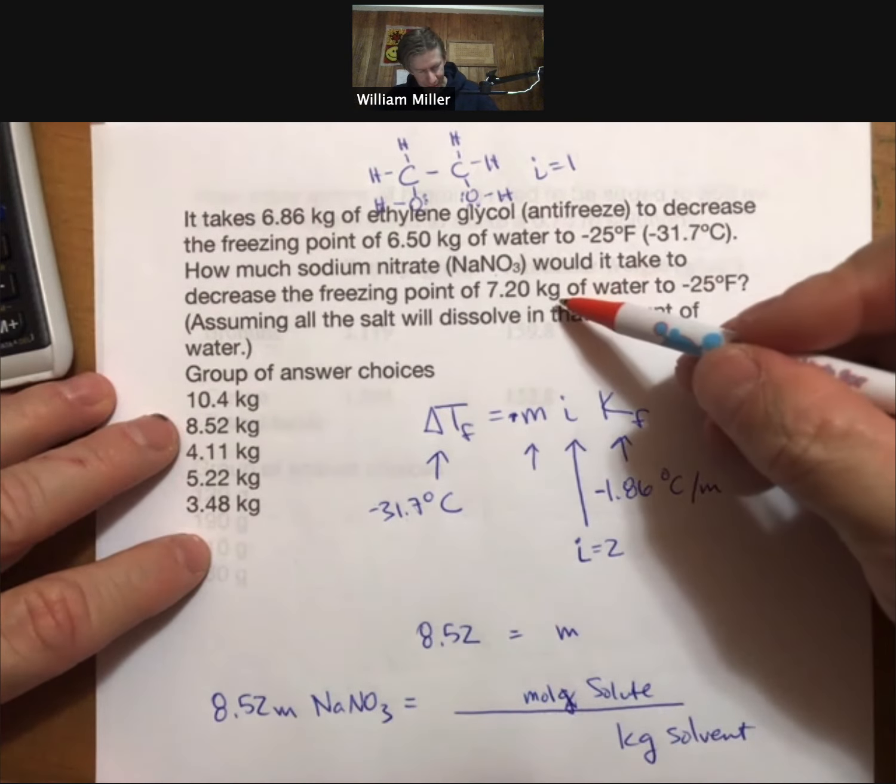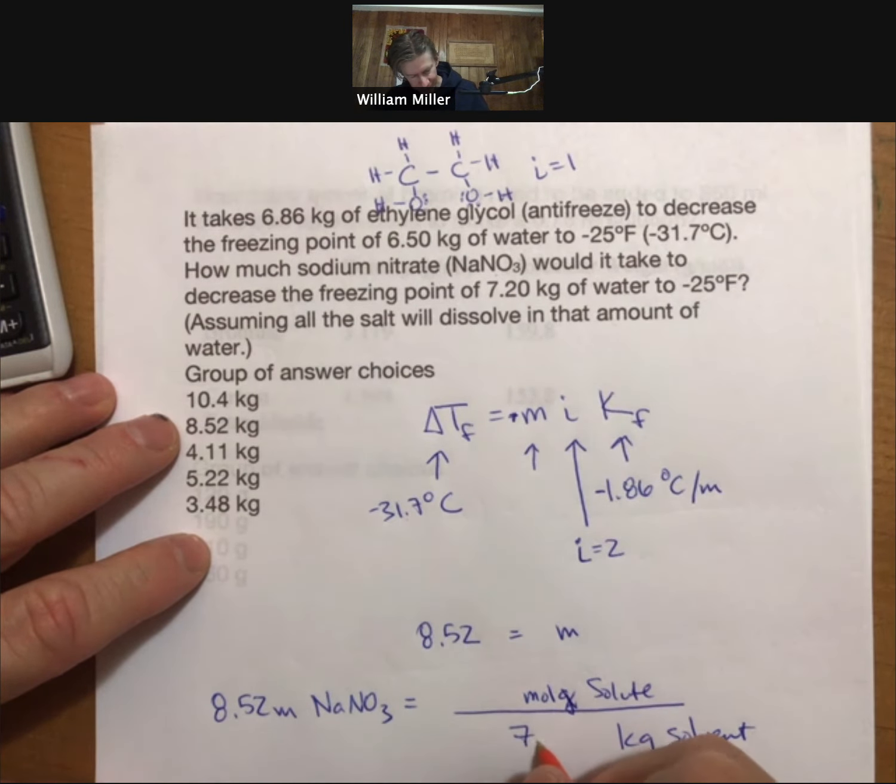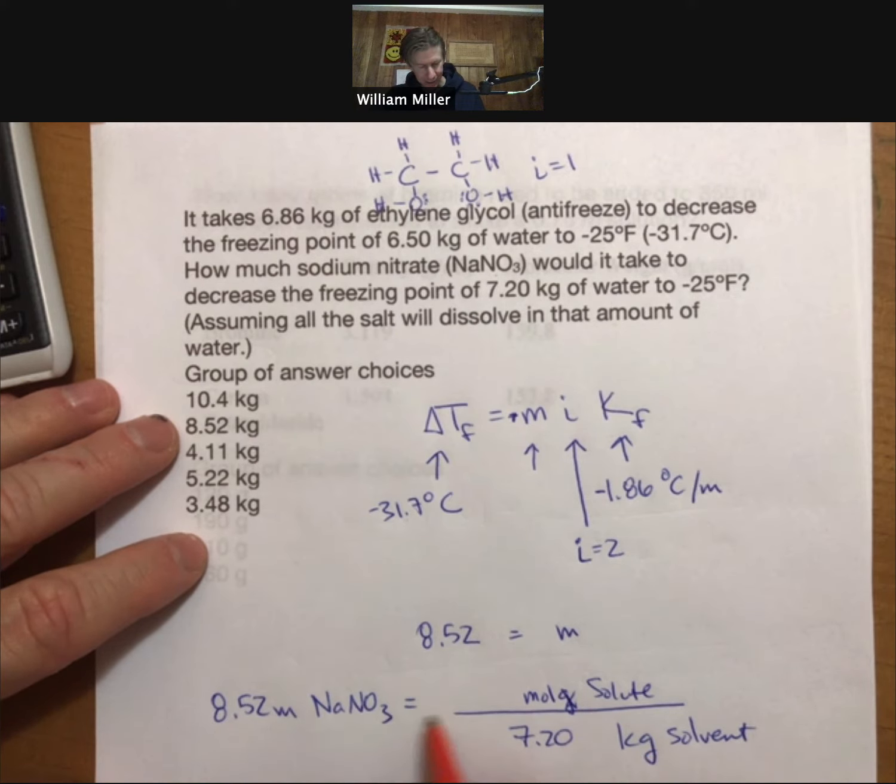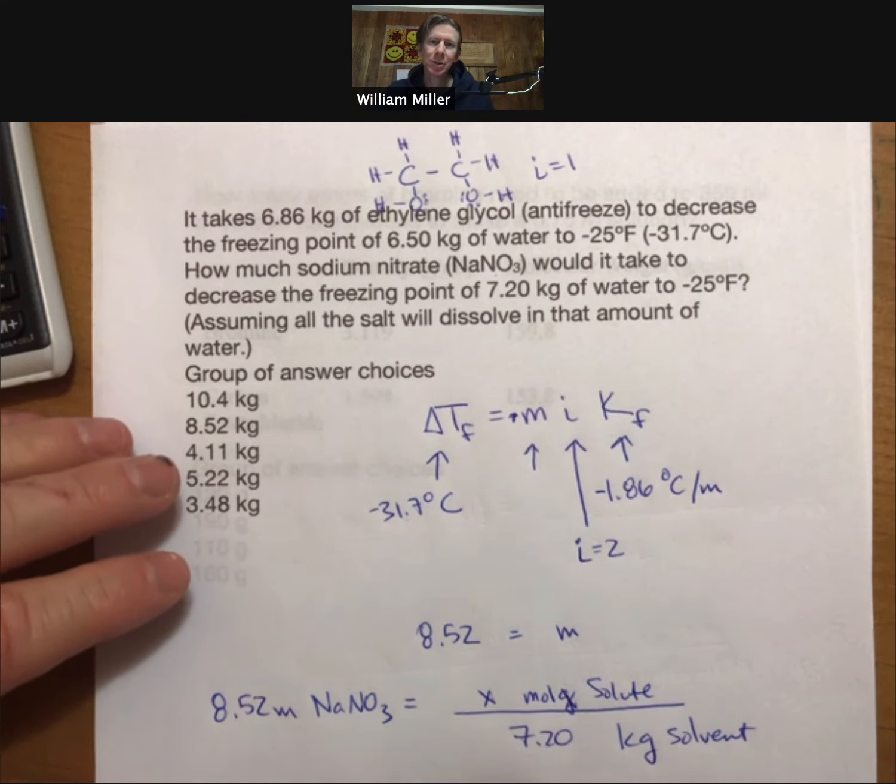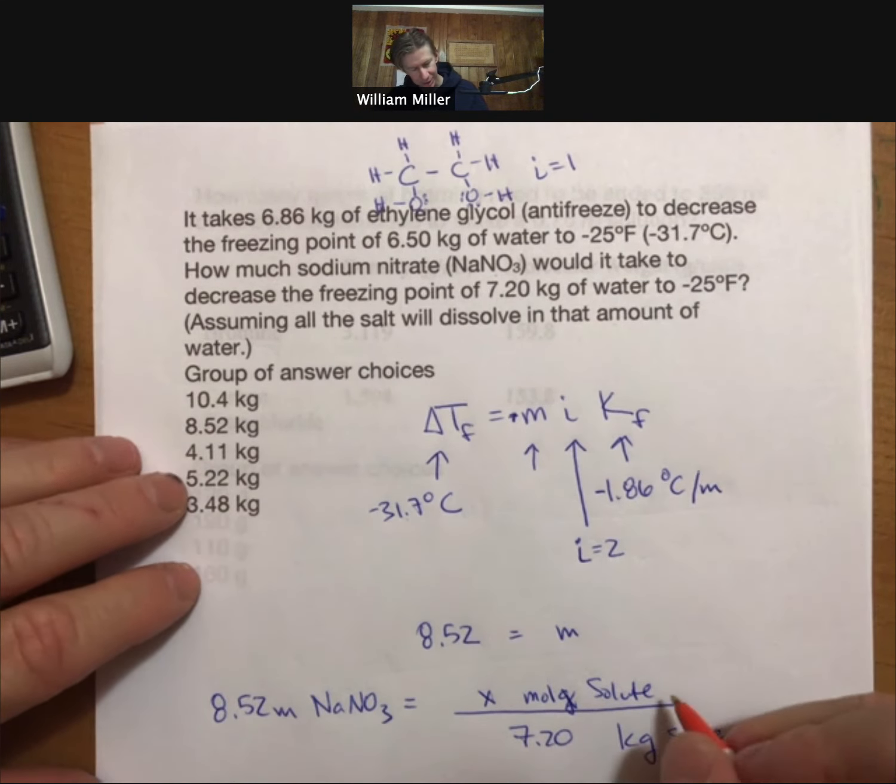We know that we've got 7.20 kilograms. We know that we want 8.52 molal. That's going to allow us to solve for X, which is the moles of sodium nitrate.